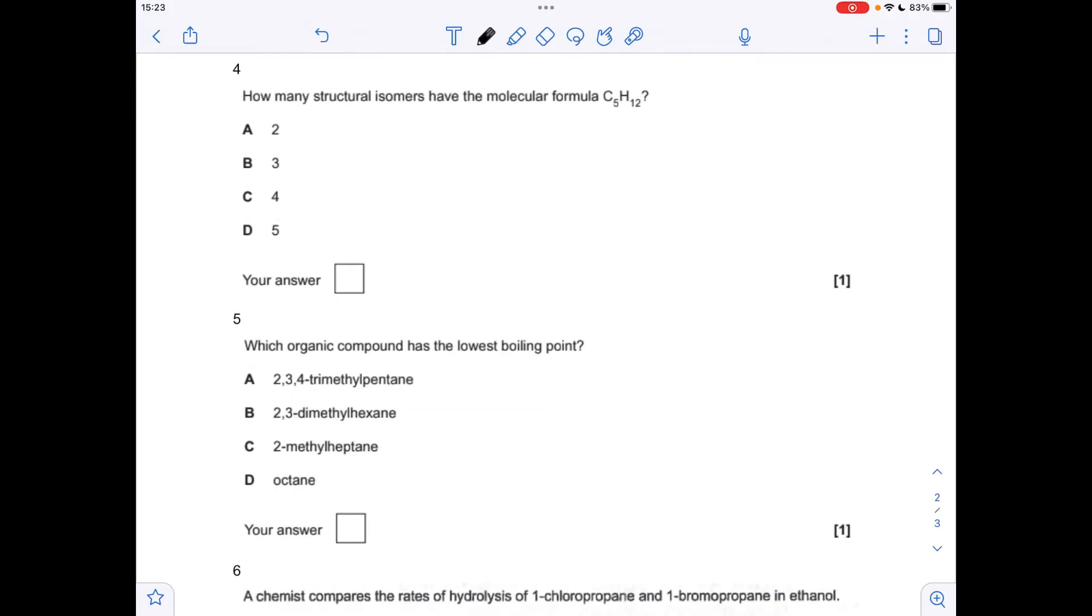Moving on to the next one. So how many structural isomers have the molecular formula C5H12? So the obvious starting one is a chain of 5: 1, 2, 3, 4, 5. So that's pentane. Then if we drop the main chain down to 4 and then put a methyl group either on that one or that one because they're the same thing.